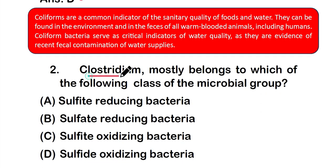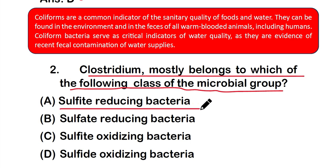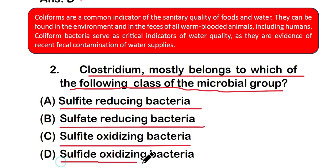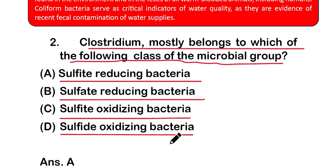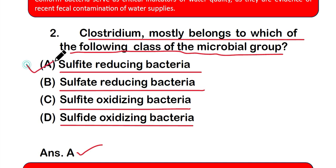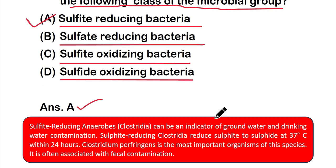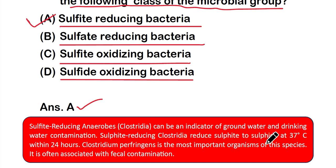Question two: Clostridium mostly belongs to which of the following class of microbial groups? The right answer is option A — sulfite-reducing bacteria. Sulfite-reducing anaerobes such as Clostridium can be an indicator of groundwater and drinking water contamination. They reduce sulfite to sulfide at 37°C within 24 hours, and Clostridium perfringens is the most important organism of this species.